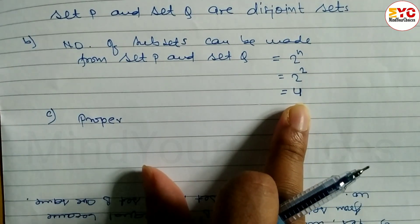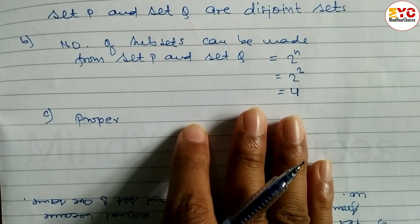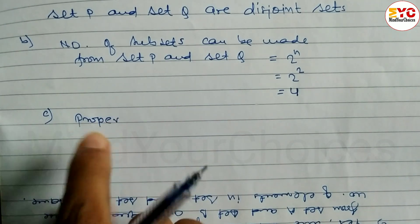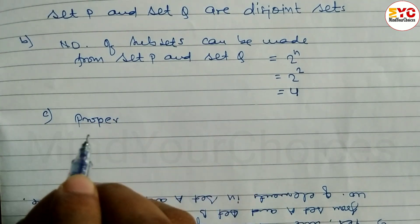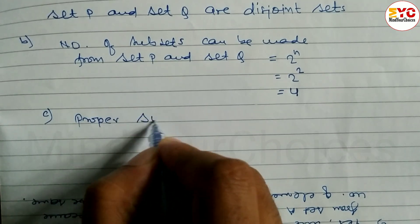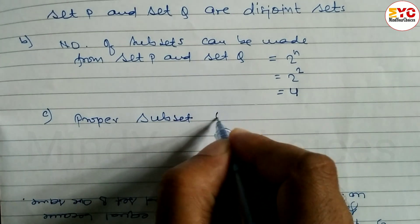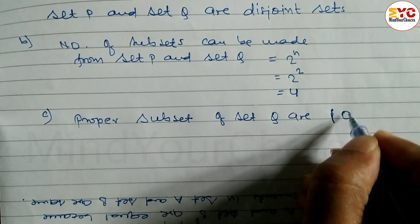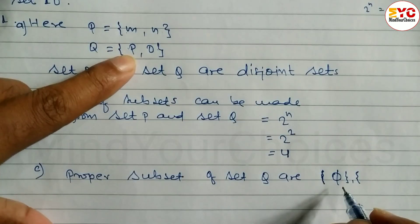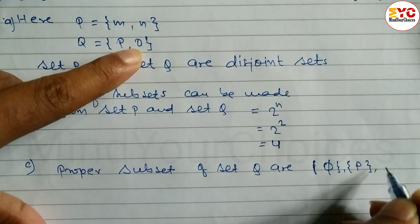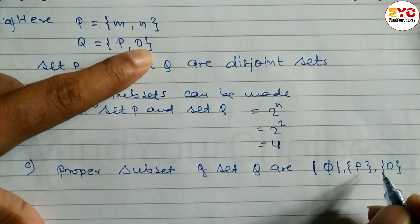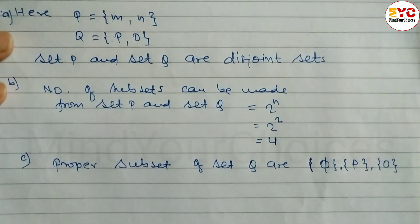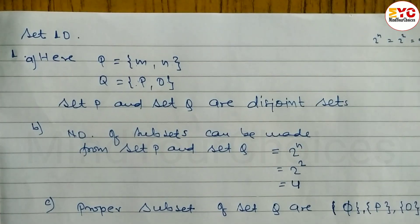For question C: state the proper subsets that can be made from Q. Q = {P, O}. We have 4 subsets total; 3 are proper and 1 is improper. The proper subsets of Q are: empty set, {P}, and {O}. We do not include {P, O} because that is the improper subset.